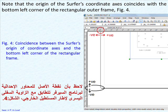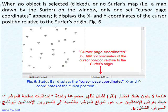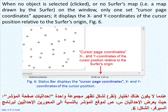Note that the origin of the Surfer's coordinate axis coincides with the bottom left corner of the rectangular outer frame, Figure 4. One, two, or three sets of figures may appear on the status bar on the right side of the bottom edge. The left is the cursor map coordinates. The middle is the cursor page coordinates. And the right is the dimensions, Figure 5. When no object is selected, or no Surfer map is on the window, only one set of cursor page coordinates appears. It displays the X and Y coordinates of the cursor position relative to the Surfer's origin, Figure 6.